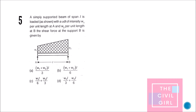Next question: a simply supported beam of span L is loaded with trapezoidal UDL having intensity W1 per unit length at A and W2 per unit length at B. We need the shear force at support B, which equals the reaction RB. To find RB, equate moment at A equal to zero: RB × L equals the moment contributions from the distributed load.